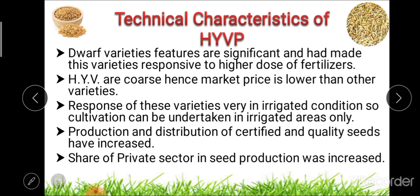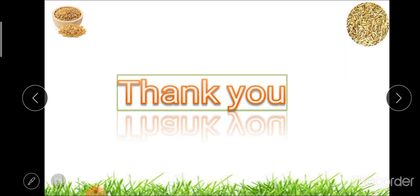This covers all aspects of the High Yielding Variety Program — including the period, crops involved, objectives, advantages, and technical characteristics. Exam questions may ask for a short note or a detailed explanation of the High Yielding Variety Program.